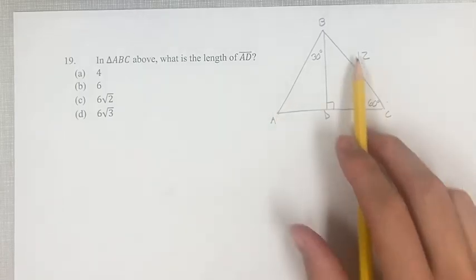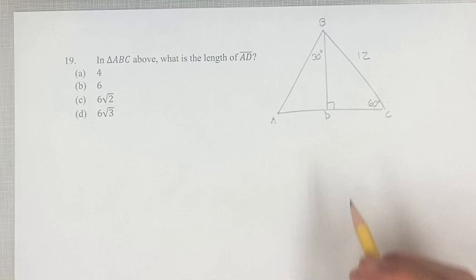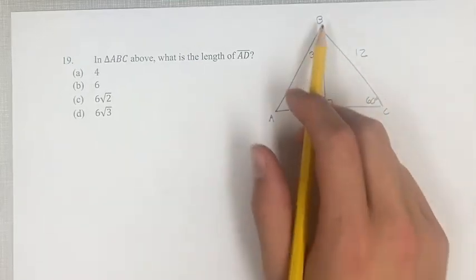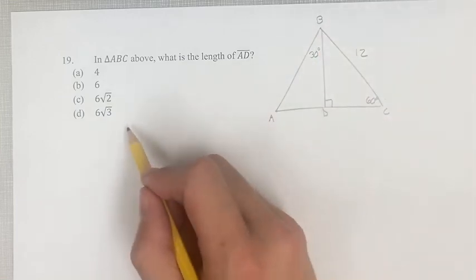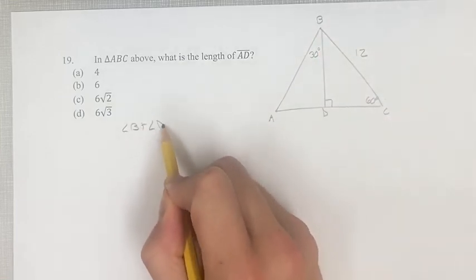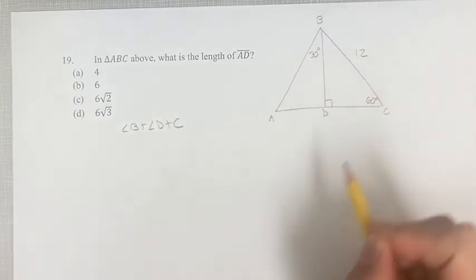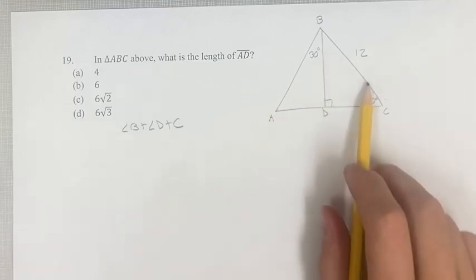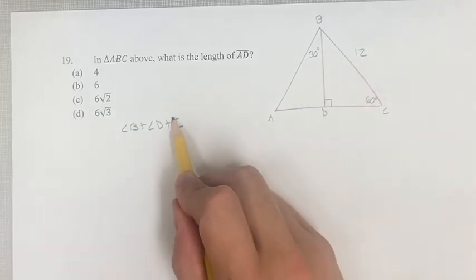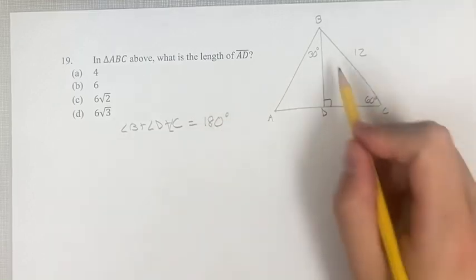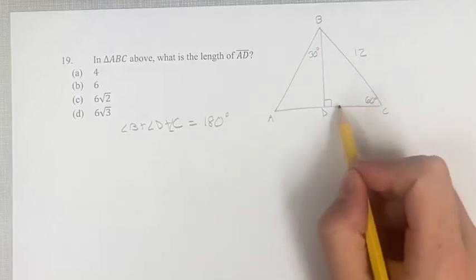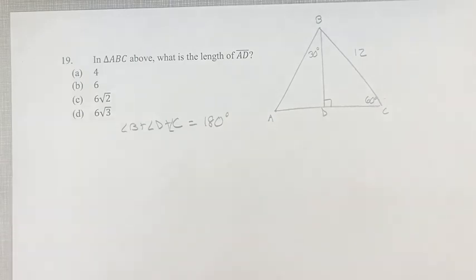The first thing we're going to do is we're going to fill in the rest of these angles. So for triangle BDC, the angles inside this triangle, called B, D, and C, these angles all add up to 180 degrees. The interior angles for a triangle are always going to add up to 180 degrees.